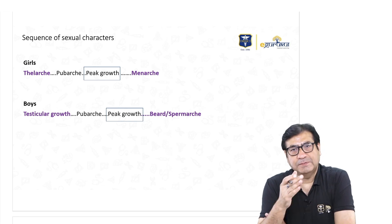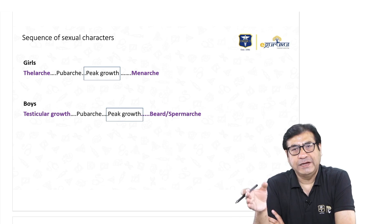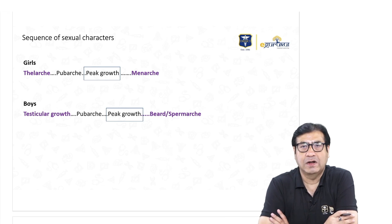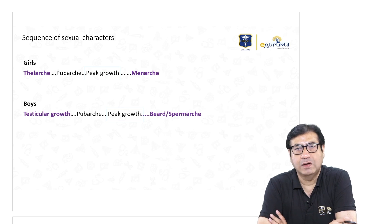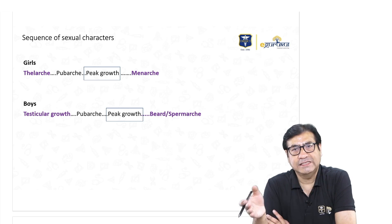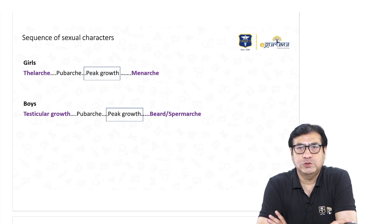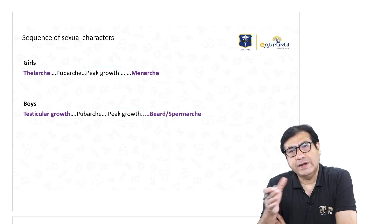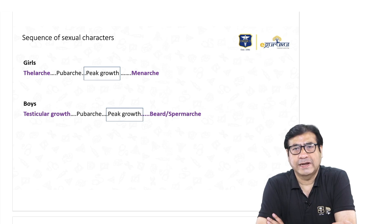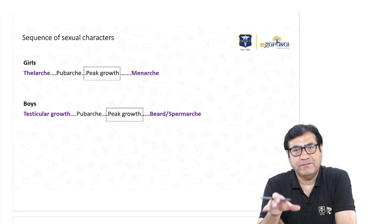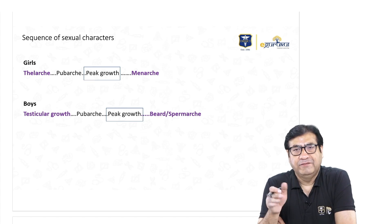Subsequently the child passes through different phases: the first year when the child is called as an infant; one to three years when the child is called as a toddler; three to six years is the preschool age group; six to twelve years is the school age group; and 10 to 19 years, according to the World Health Organization, is called the adolescent period.